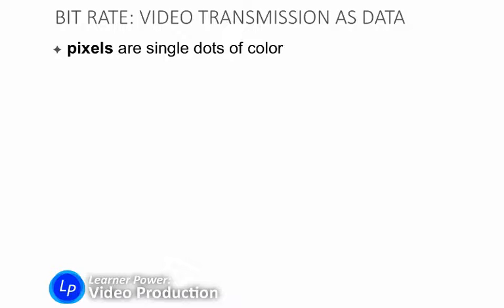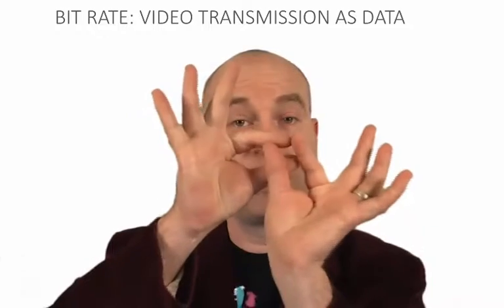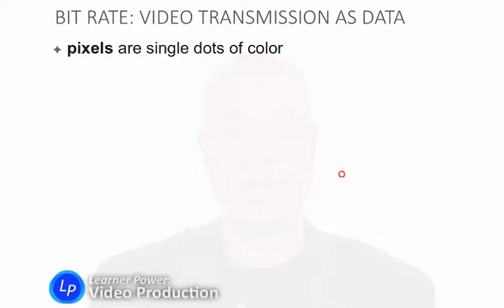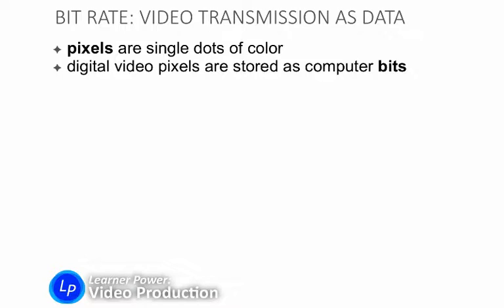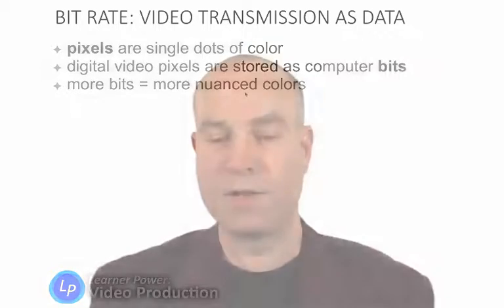In order to get to that equation, we need to define a few new terms. A pixel is a single dot of color. If you zoom in close enough on any video monitor, you'll see little pixels — little square dots, each one of which is a single color. The computer stores those pixels as bits, and bits are data points within the computer. The more bits the computer uses to store the color data for a particular pixel, the more nuanced or detailed those colors can be.